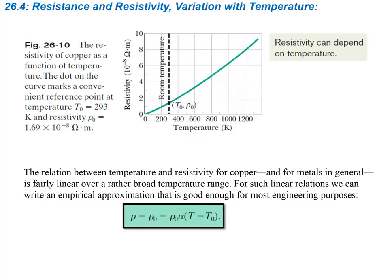The relationship between temperature and resistivity for copper, and for most metals in general, is fairly linear over a broad temperature range. For such linear relations, we can write an empirical approximation: the change in resistivity relates to the reference resistivity at room temperature (293 K) times alpha, the temperature coefficient of resistivity, multiplied by the difference in temperature from that reference point.